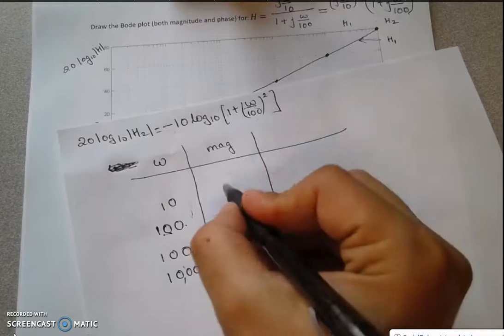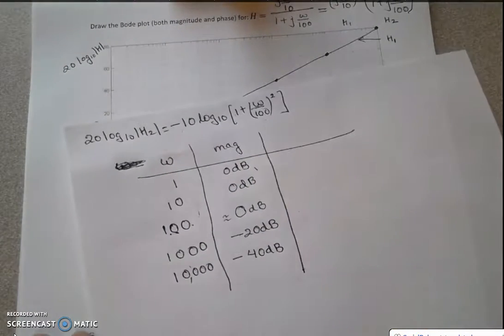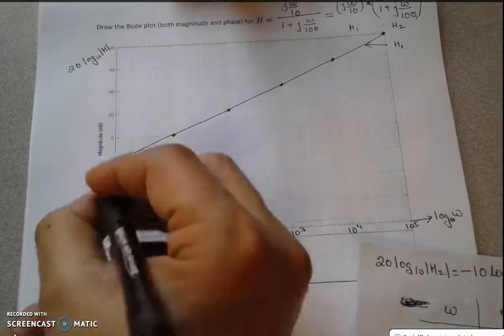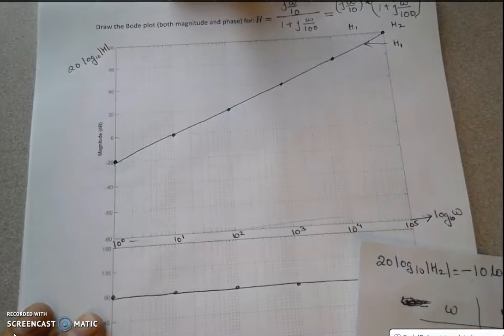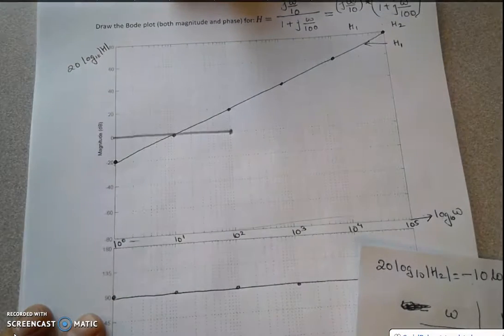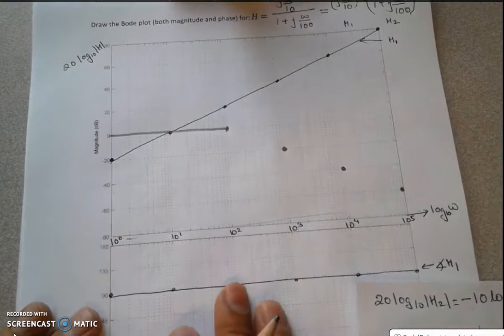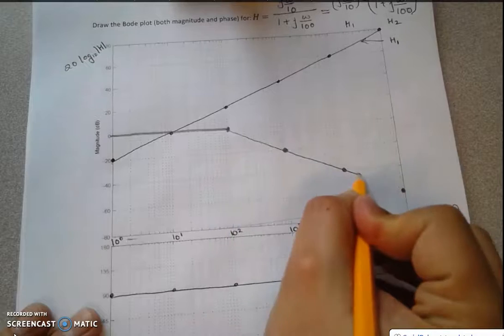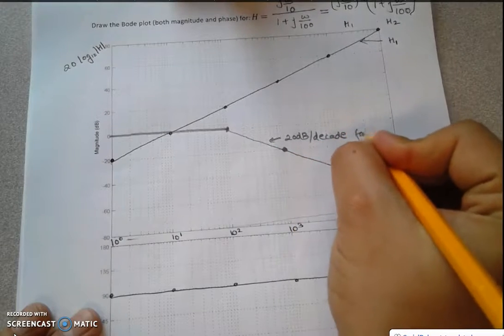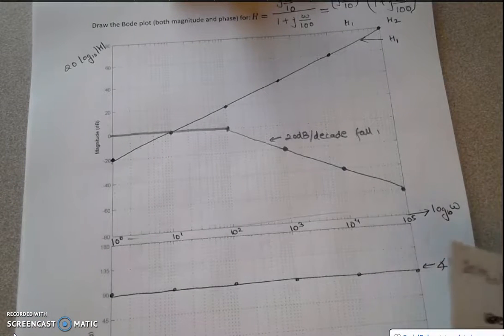At low frequencies (omega well below 100), the magnitude is approximately 0 dB. So the magnitude plot for H2 is flat at 0 dB up to omega equals 100, then falls at a rate of 20 dB per decade after that corner frequency.